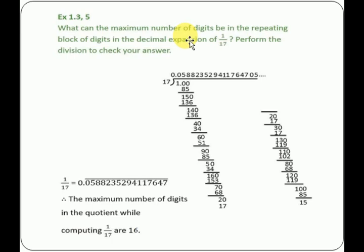You will find out after which number the repetition will start. We will check here. This is the expansion of 1 by 17. 1 is less than 17, so we will definitely use decimal. We will use decimal here and check.